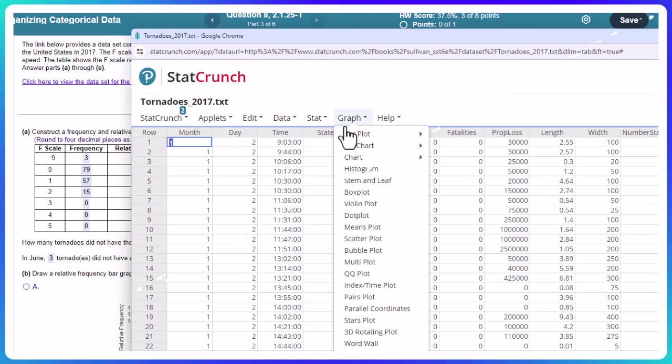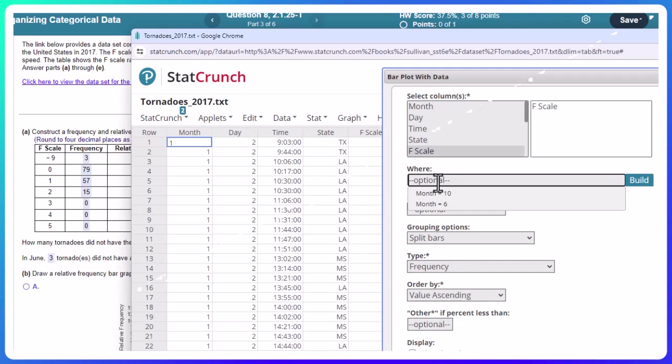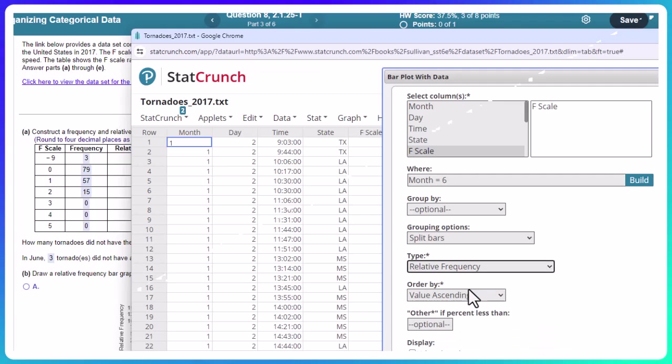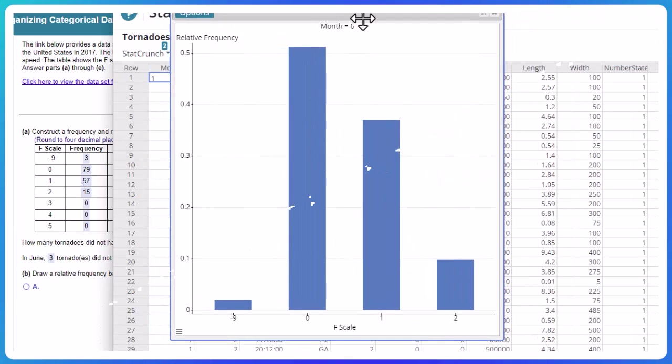So we can do it in StatCrunch. Close that out. We can go graph. Bar chart. And here we have raw data. So we are doing the F scale for the month of June. And it looks like we are doing relative frequency. And there we go.